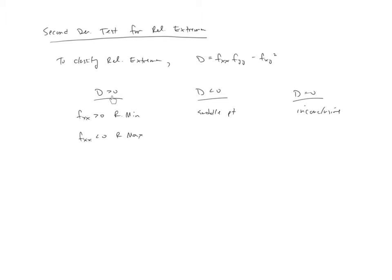So if it's bigger than 0, this is where we have to investigate f sub xx, which would be this part right here. If that's bigger than 0, you have a relative minimum. If it is less than 0, you have a relative maximum. If D is less than 0, you have a saddle point.